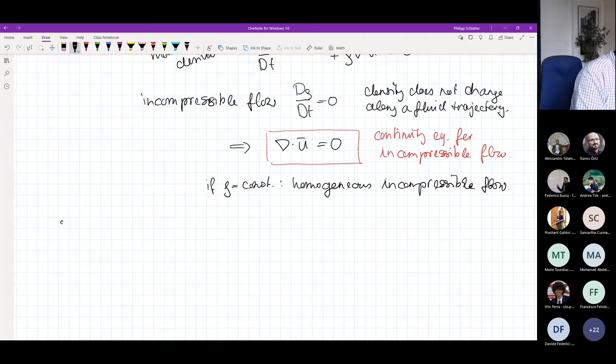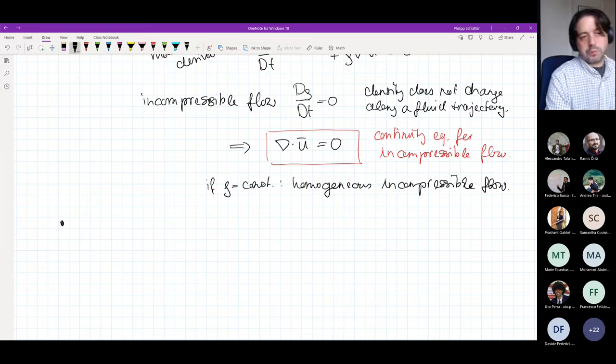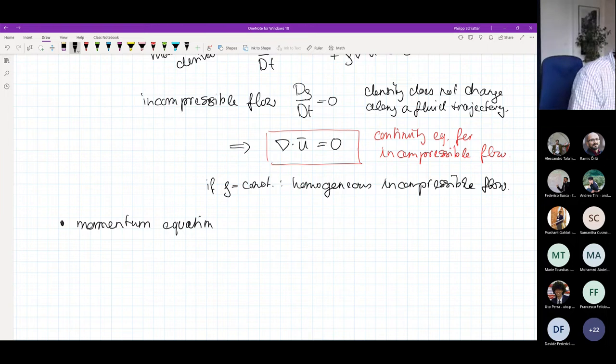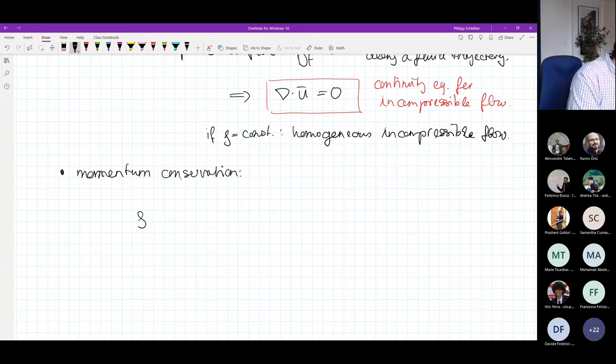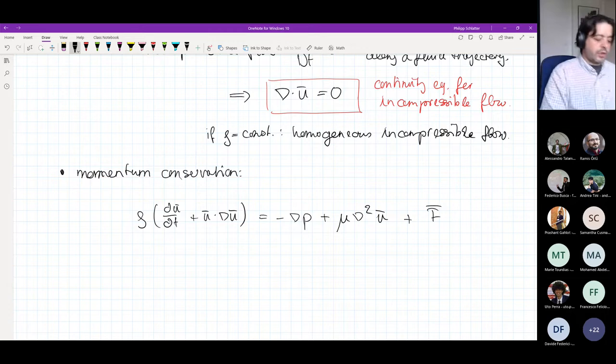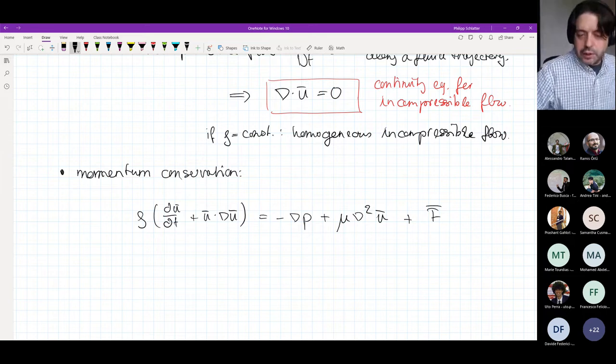The second one obviously will be the momentum equations. That's what people sometimes call the Navier-Stokes equations. But in the end, it is simply the application of Newton's second law onto a fluid system. The momentum conservation, the way that we can write it is rho times du dt plus u times Nabla u equals minus grad P plus mu times Nabla squared u plus some force F.